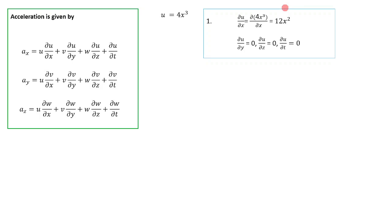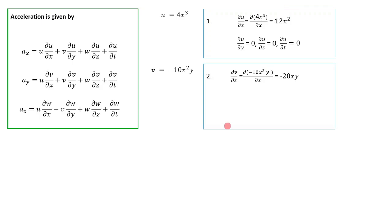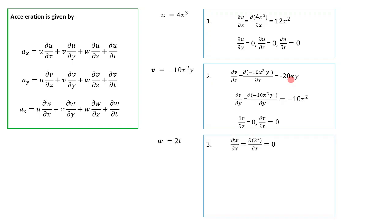For the v term, v = minus 10x squared y. We find ∂v/∂x by differentiating with respect to x, treating y as constant: the result is minus 20xy. Likewise ∂v/∂y = minus 10x squared, and ∂v/∂z = 0 and ∂v/∂t = 0 since there are no z or t terms.